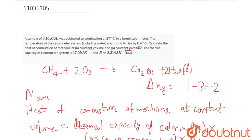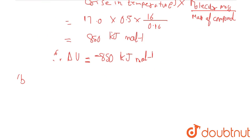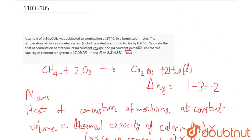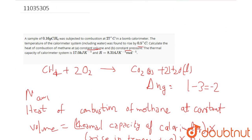Now we have the value of heat of combustion of methane at constant volume. Now if we look at part B, that is constant pressure, then the heat of combustion of methane at constant pressure, that is delta H, is equal to delta U plus delta Ng RT. Delta Ng we have already calculated here, that is minus 2.